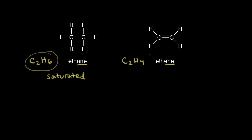If we look at ethene, we only have four hydrogens for two carbons, so we say that ethene is unsaturated. For two carbons, it's possible to have more hydrogens, so this is unsaturated.